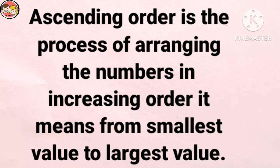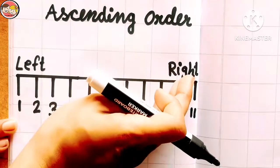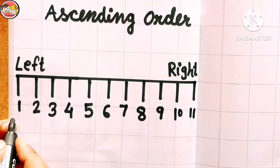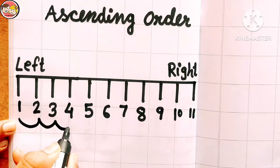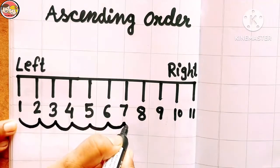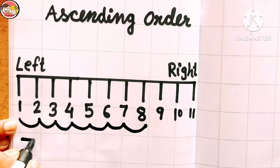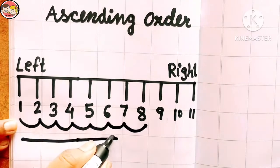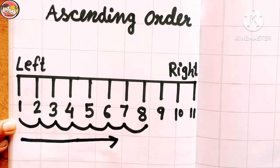This order goes from left to right. Now look at the number line — this is the left side and this is the right side. Start counting from number one: one, two, three, four, five, six, seven, eight. Observe very carefully: here we are moving from left side to right side and the number is increasing by one every time. That's why ascending order is also known as increasing order.